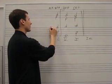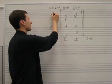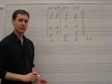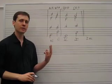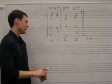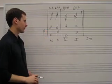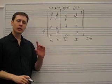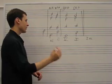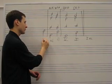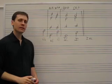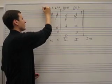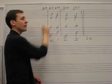Again, we start with A, count up a fifth: A, B, C, D, E. The root is E. Again, key of C major. What chord can be built on the note E? The answer: a minor three chord, or a mediant chord. So we're actually building an E minor chord.